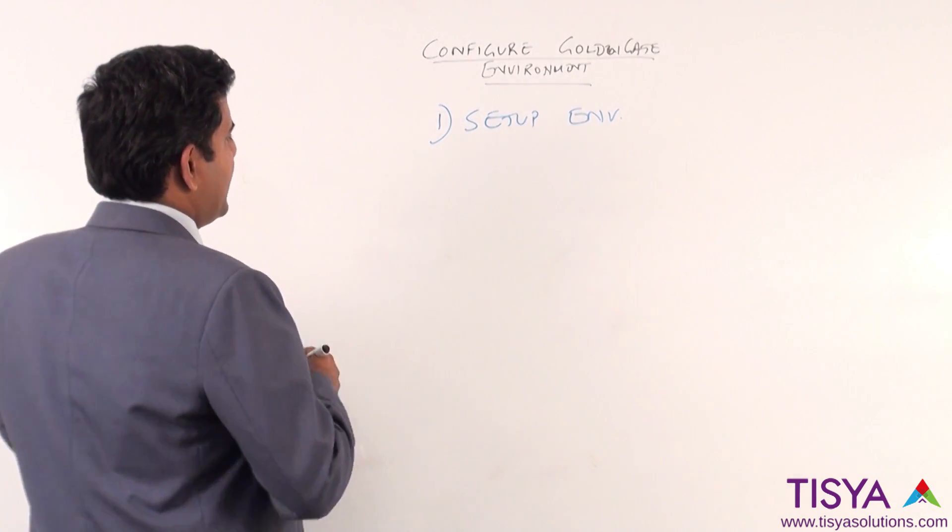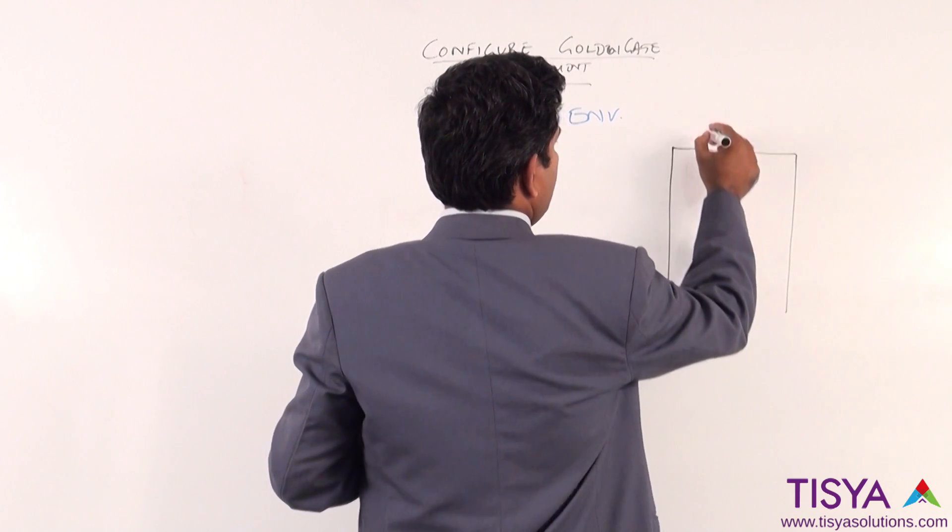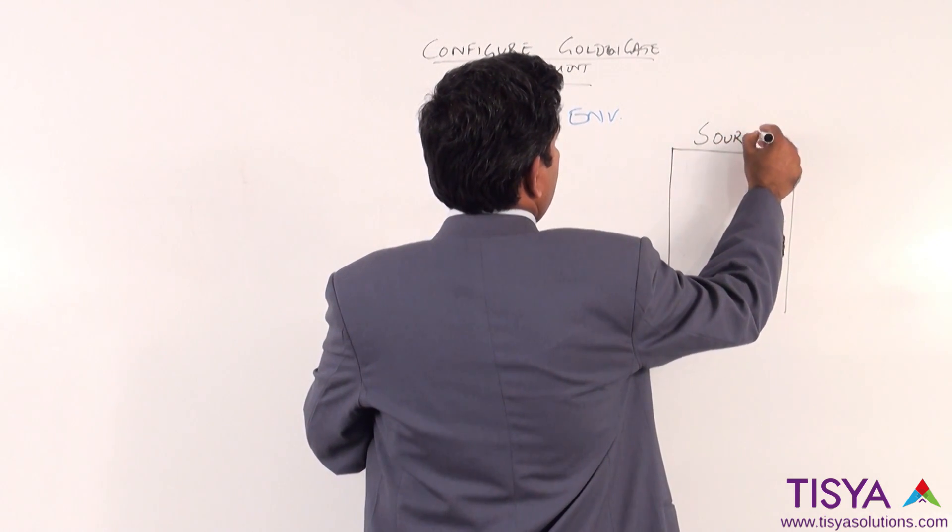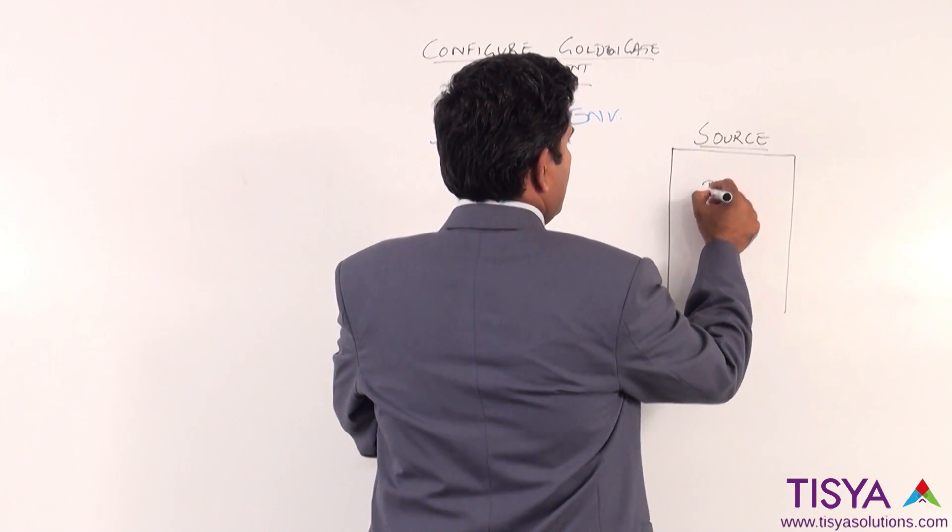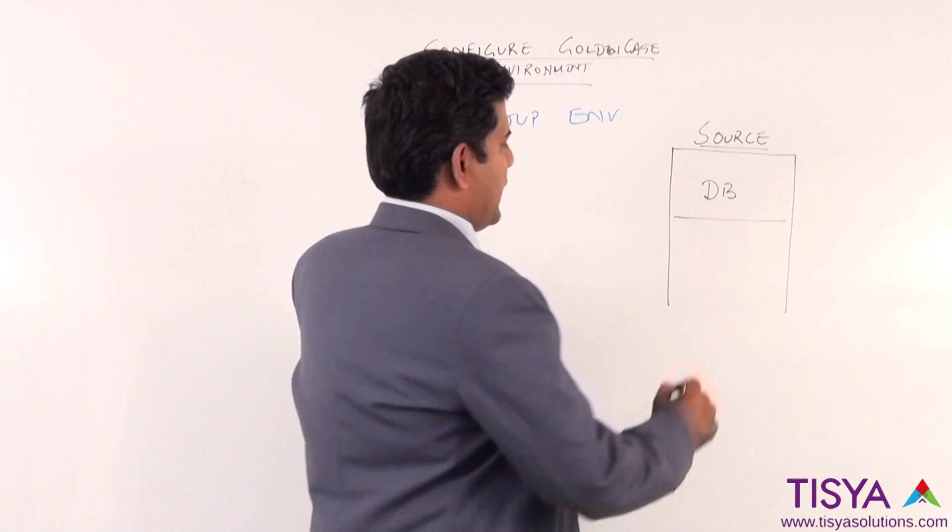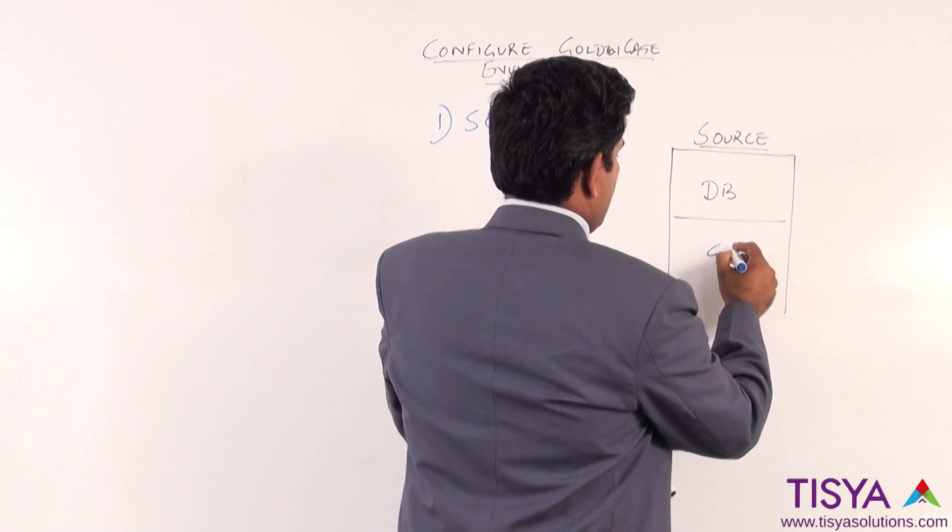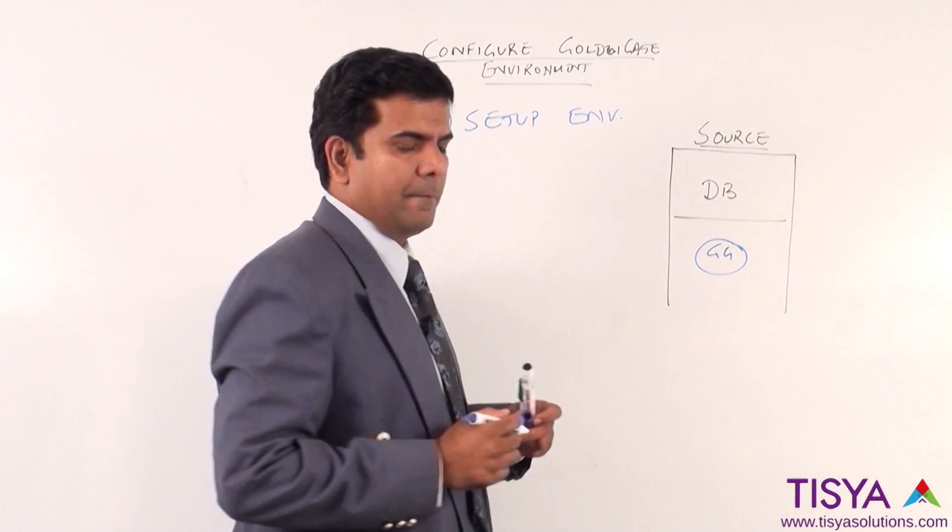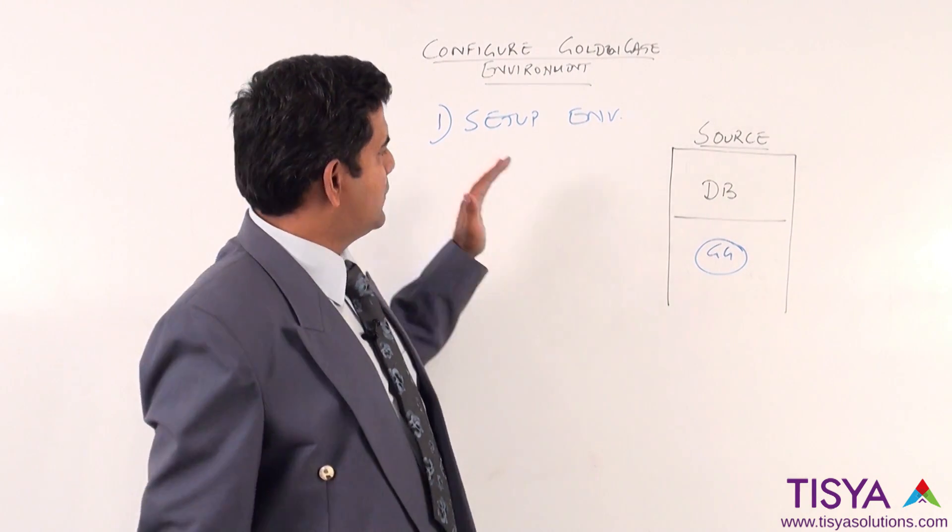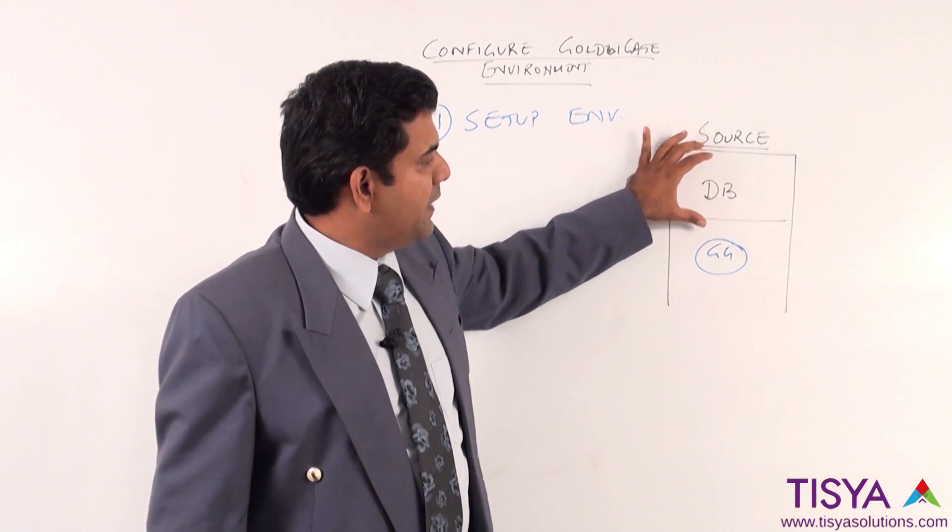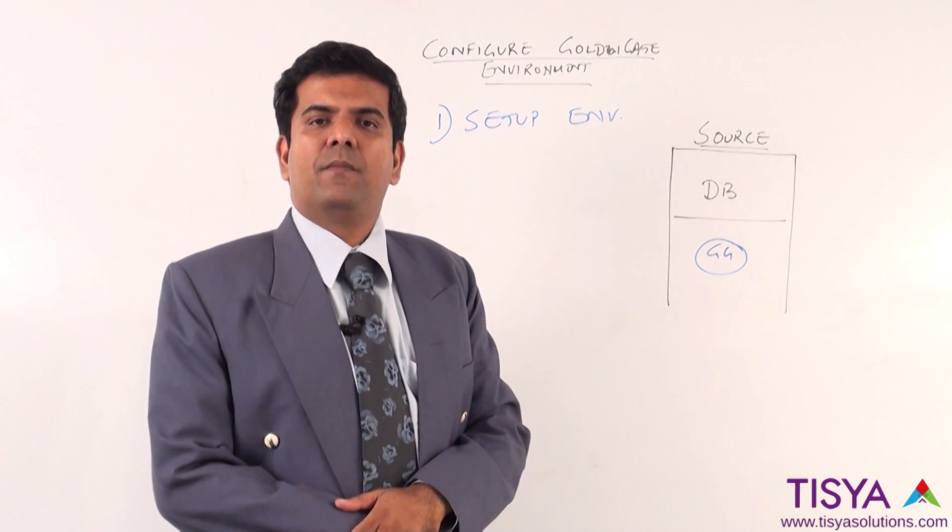When we are talking about setting up a Golden Gate environment, we are assuming that there is a source setup available in which there is a database already available and we have installed the Golden Gate software. Since this course is Golden Gate for Oracle, we will specifically look at what should be done in a database which is Oracle to configure the Golden Gate to make it work.